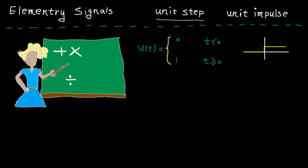Here is the function. This function is very useful, as you can represent many signals in terms of the unit step function. Here is the first example: this signal is given, which is 1 between 0 and 1, and we want to express it in terms of unit step.